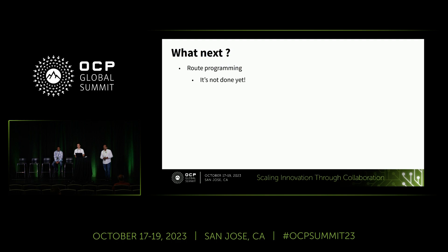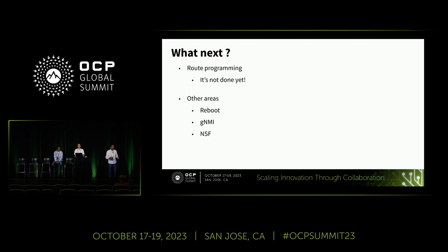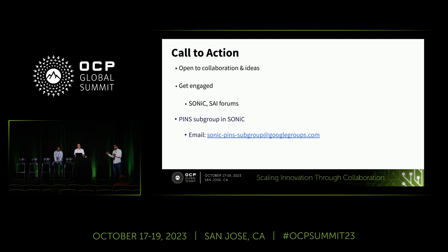We are aspiring to address more bottlenecks and are planning to come back next year at OCP to share those results. For our call to action: we were listening to the previous presentation and also on Tuesday we had a presentation in the routing group on related challenges. We see a lot of synergies we could work together on to improve overall system performance, and we encourage people to get in touch with us so we can solve common problems and make good progress forward. Thank you.